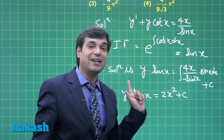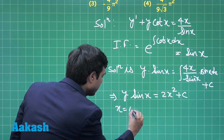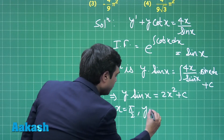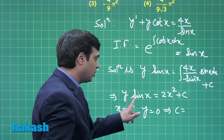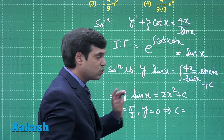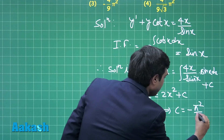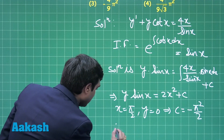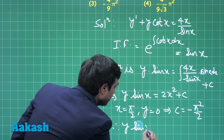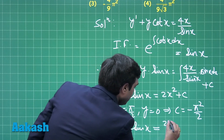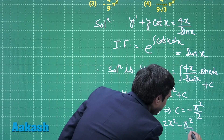Now applying the condition: when x = π/2, y = 0. Substituting, we get 0 = 2·(π/2)² + C, so C = -π²/2. Therefore, the solution is y·sin(x) = 2x² - π²/2.